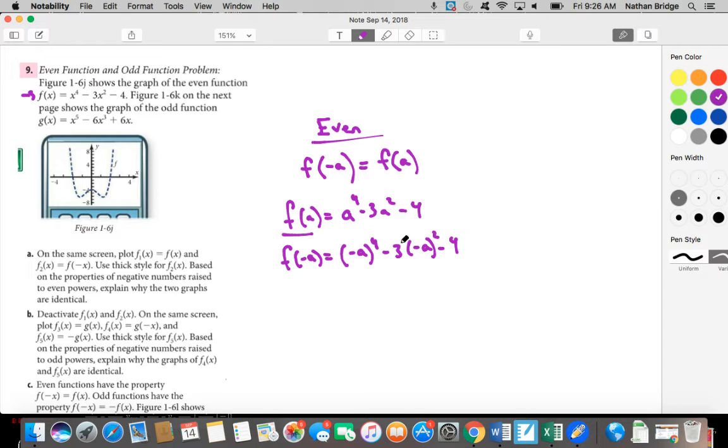Because they are even exponents, you guys then know that a negative opposite a to the fourth power is just a to the fourth power, and opposite a squared is just a squared. And so what we've in fact done is confirmed that since f of opposite a is equal to f of a, that this function is in fact even.